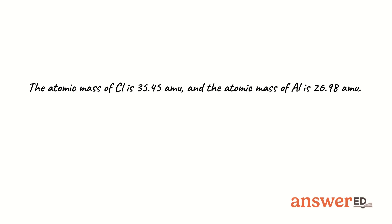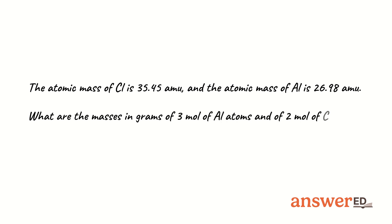The atomic mass of Cl is 35.45 amu, and the atomic mass of Al is 26.98 amu. What are the masses in grams of 3 moles of Al atoms and of 2 moles of Cl atoms?